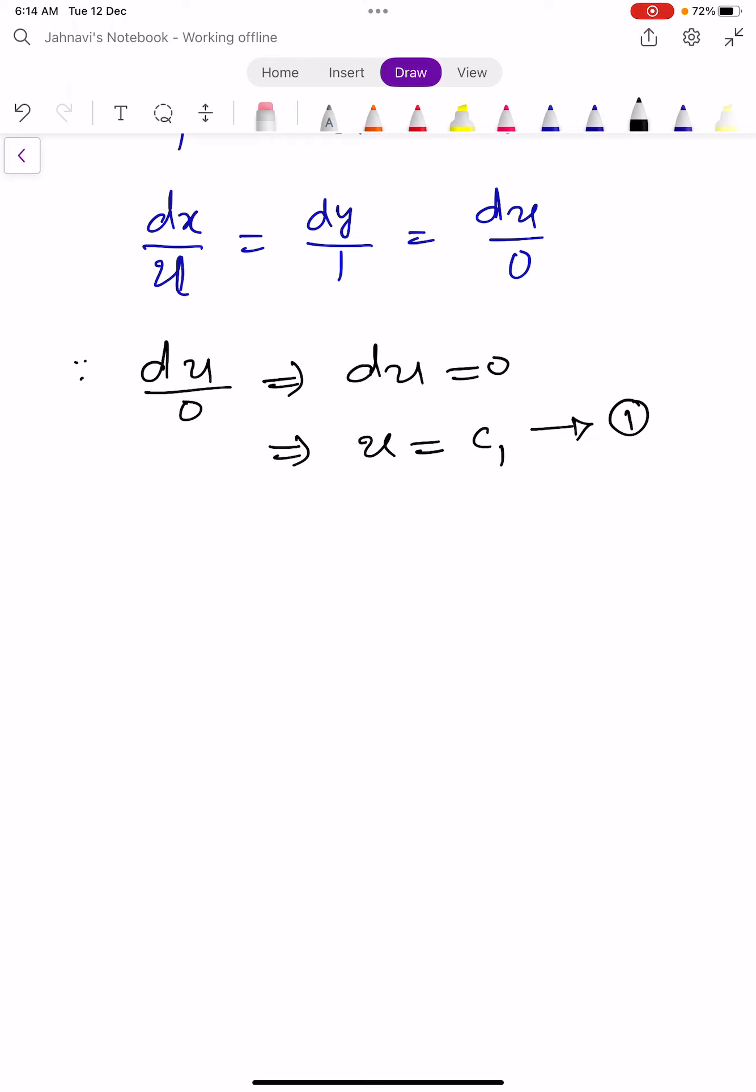By taking the first two fractions of this equation, dx/u = dy/1, which implies dx = c1*dy. On integrating we get x = c1*y + c2, and c1 = u.